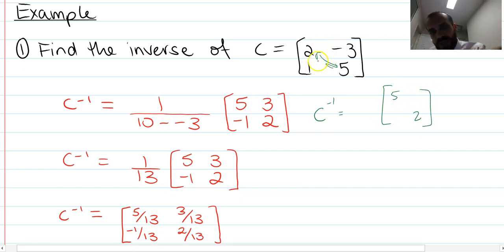Negative 3 and 1 stay where they are, but their signs will change. So negative 3 will become positive 3, and 1 will become negative 1.